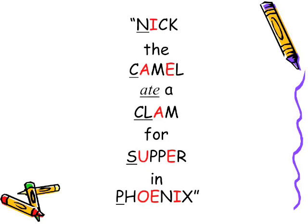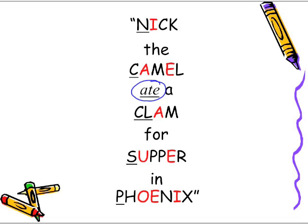The way it's written with the underlining — and another key term here is A-T-E. We're going to see what all that means in just a second as we break this down. This is a unique phrase: "Nick the camel ate a clam for supper in Phoenix."